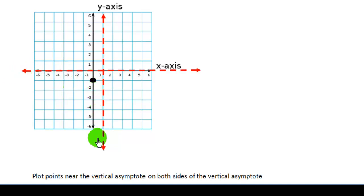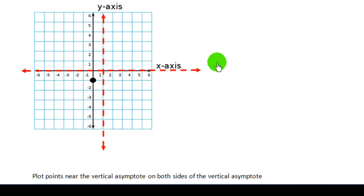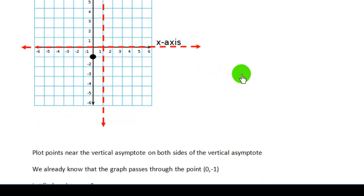The graph will approach the vertical asymptote as y gets very large or very small — more positive or more negative. It will also approach the horizontal asymptote as x gets very large, but it will not cross the x-axis. So one of two things happens on the right side of the vertical asymptote. To determine which, I'll plot a point to the right of the vertical asymptote. Since the vertical asymptote is at x equals 1, I'll choose x equals 2.